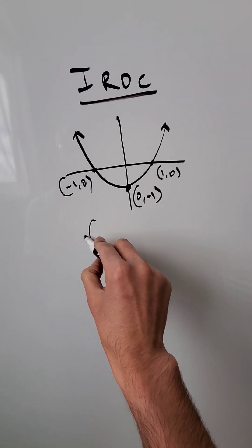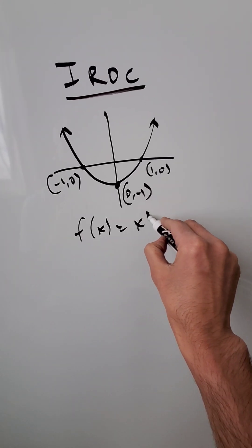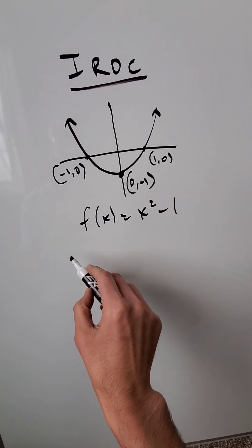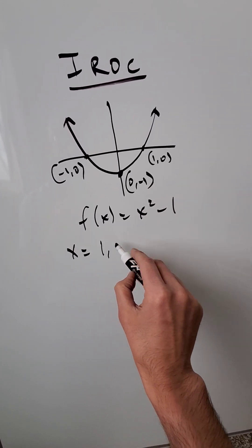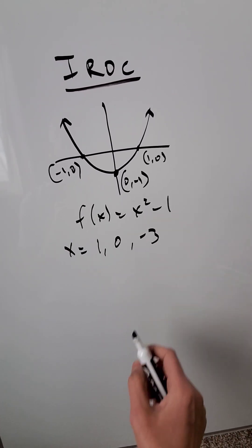I have a function over here and let this function be f of x equals x squared minus 1. This is a graph of it. I want to determine the slopes of tangent lines at values x equals 1, x equals 0, and x equals minus 3. How would I do it?